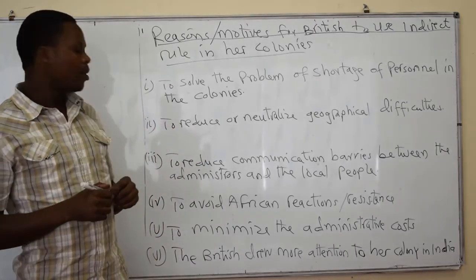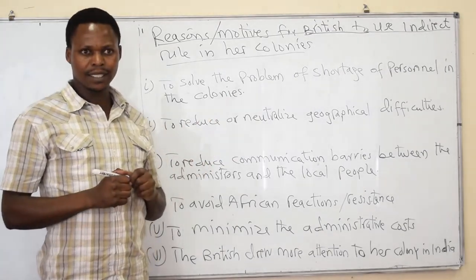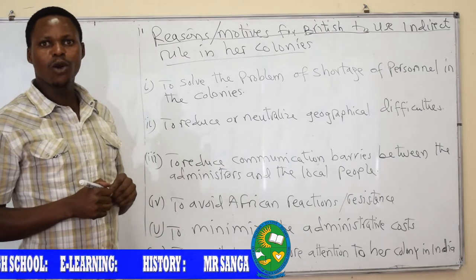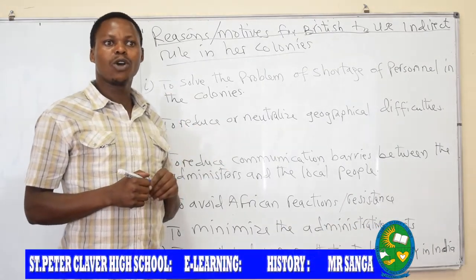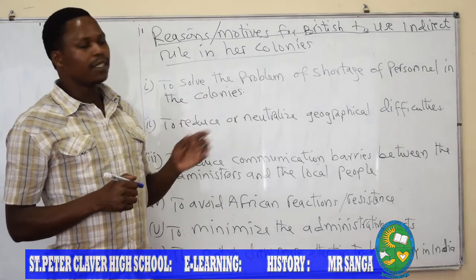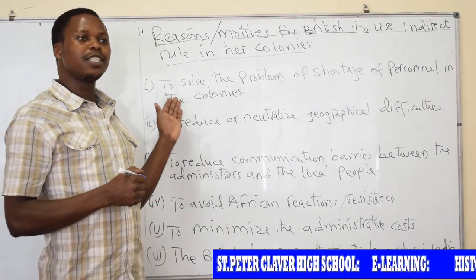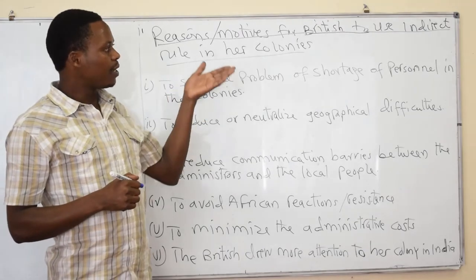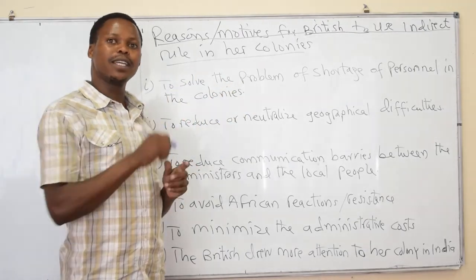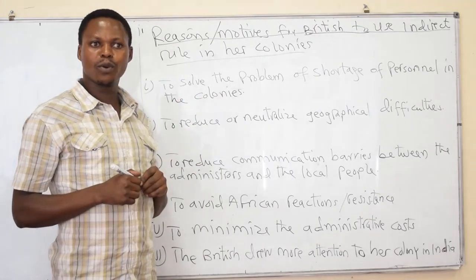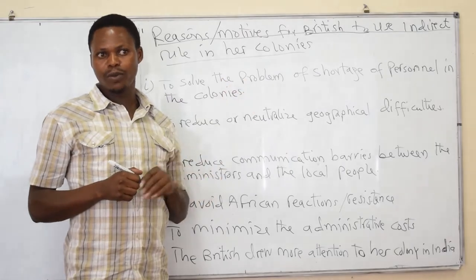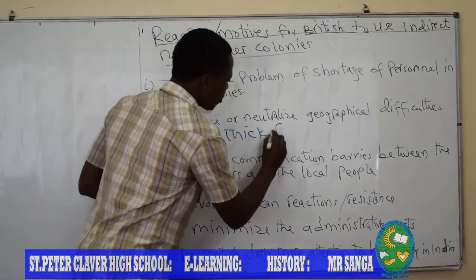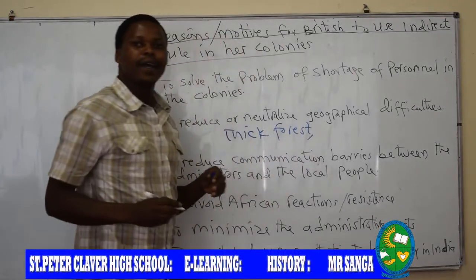Another motive was to reduce or neutralize geographical difficulties. The British reduced the climatic and physical difficulties which hindered or affected them from reaching different remote areas. That's why they sought to find chiefs to help them on their behalf, because the African chiefs were familiar with that environment, while British people were affected by physical problems like forests and tropical diseases.